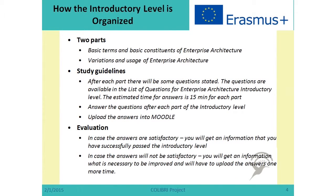The module is organized in two parts, and the video is also in two parts. The first part talks about basic terms and basic constituents of Enterprise Architecture, and the second part talks about variations and the usage of Enterprise Architecture. After each part there will be questions which you can answer, and when both parts are answered, you can upload the answers into Moodle. The list of questions is available in Moodle. Once uploaded, we will check your answers and if they are satisfactory, you will have passed this module. If there are problems, we will discuss them until your answers are satisfactory.